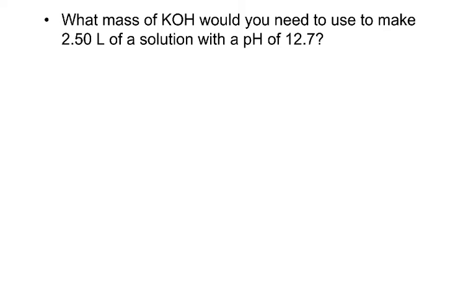One more example, kind of going backwards from the last one. In this case, we were told the pH, and we want to know what mass of potassium hydroxide I'm going to need to make 2.50 liters of solution. In this case, the ratio of the hydroxide ion concentration to the KOH concentration is 1 to 1. So what I want to do is use my pH to get the hydroxide ion concentration. Once I have the hydroxide ion concentration, I know that's what my starting KOH concentration was.